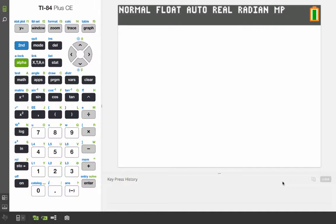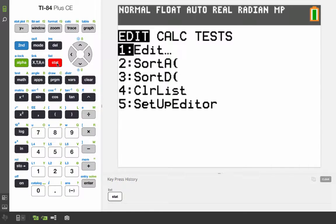Once you're signed on, you need to enter the data. The way you do that is hit the stat button. You can look at the bottom to see key press history. We need to edit. So you can either click 1 or press enter when 1 is highlighted.